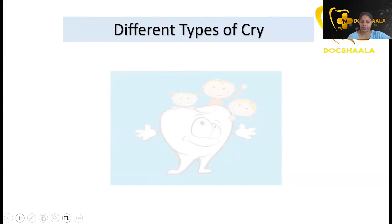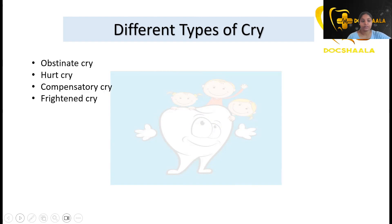Now, the different types of cry. These are classified based on how pedo patients respond to dental treatments exclusively. There are four types of cry: obstinate, hurt, compensatory, and frightened. Let's see each of them one by one.